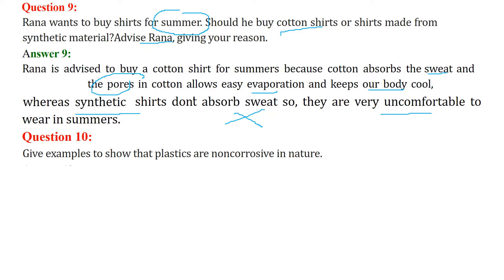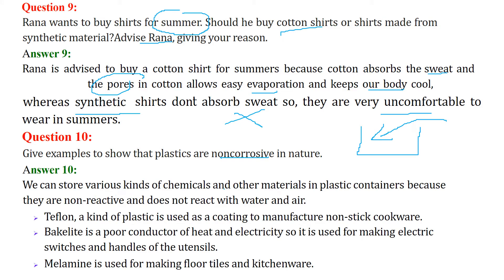Give examples to show that plastics are non-corrosive in nature. If you put a reactive chemical inside a plastic container, it will not react — that is why plastic is non-corrosive. We can store various chemicals in plastic containers because they are non-reactive with water and air. Teflon is a kind of plastic used as a coating to manufacture non-stick cookware. Bakelite is a poor conductor of heat and electricity, used for electrical switches and utensil handles. Melamine is used to make floor tiles and kitchenware.